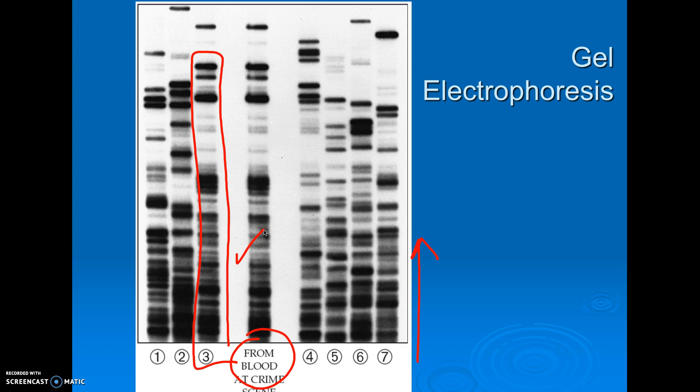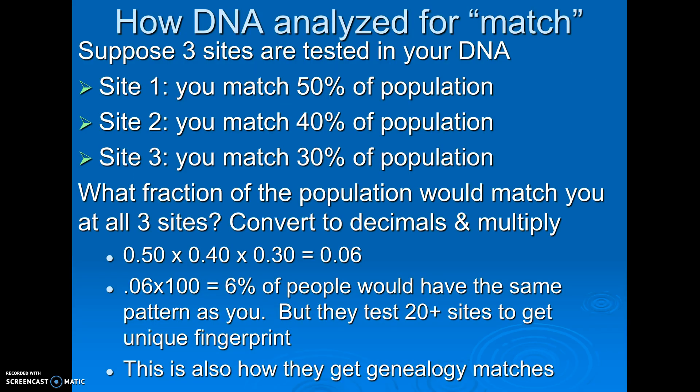The crime lab would get an electrophoresis, but they would basically be testing several different test sites on the DNA — cut sites. What I mean by sites is an area of the DNA that's cut by a restriction enzyme. This area of the DNA might not even code for anything, but these are sites where a restriction enzyme cuts.